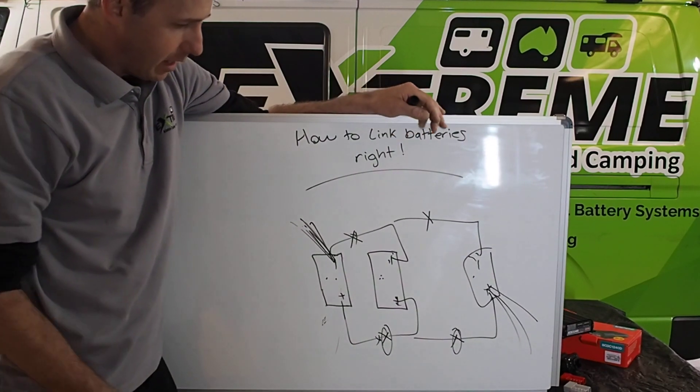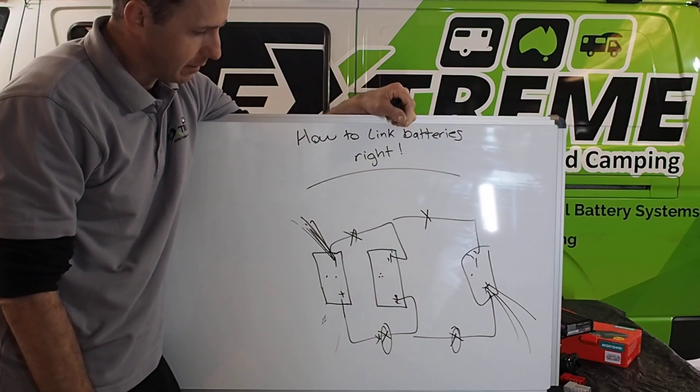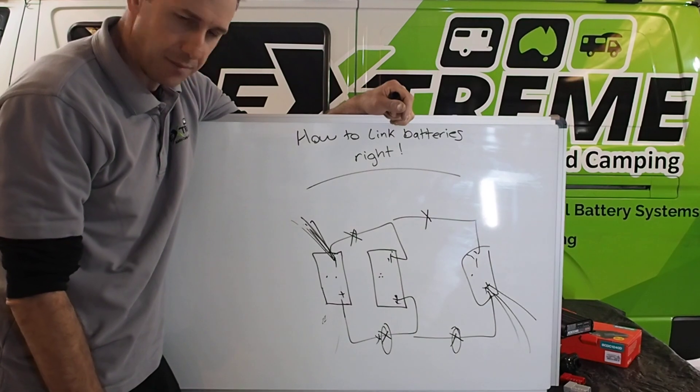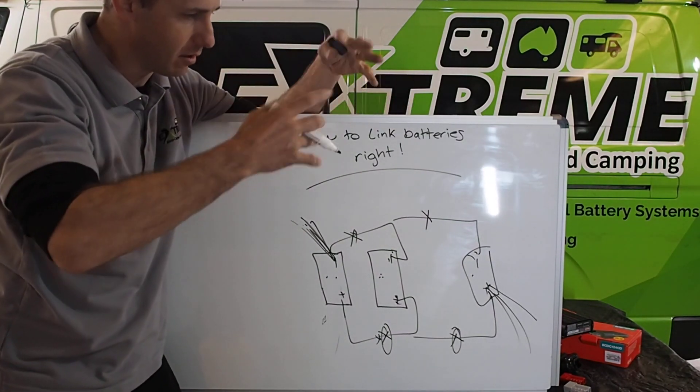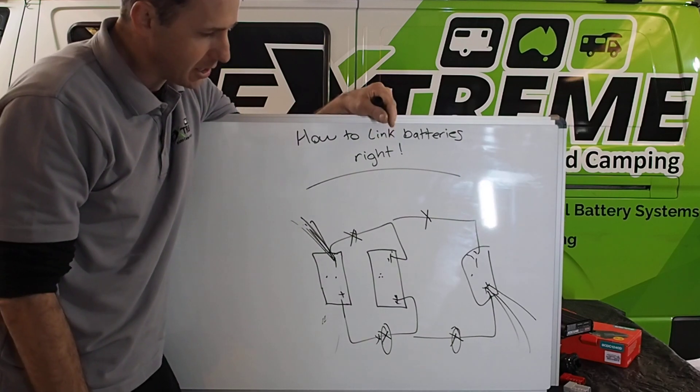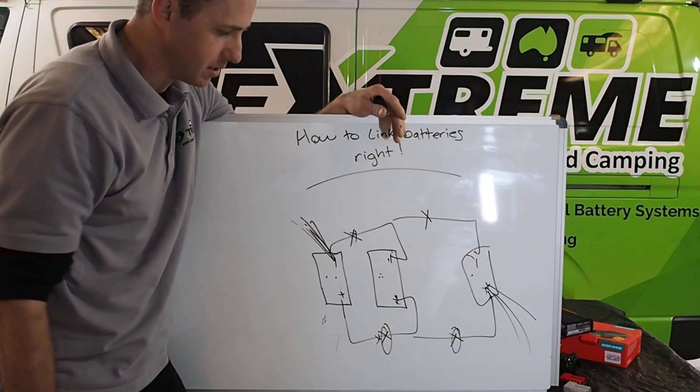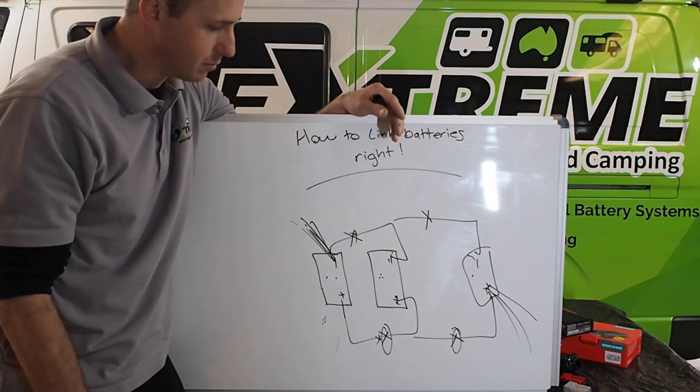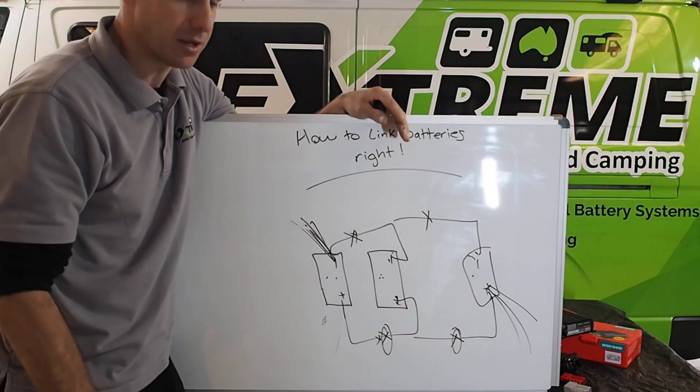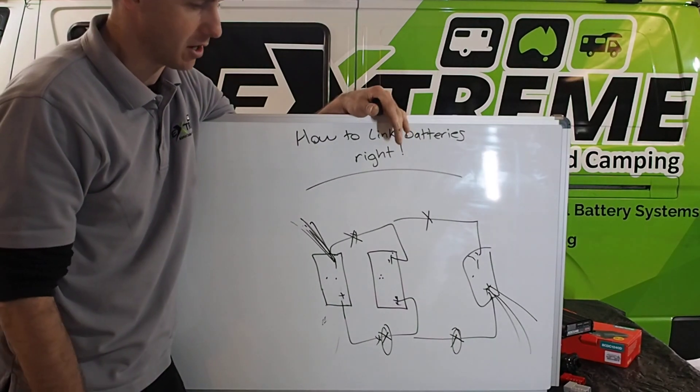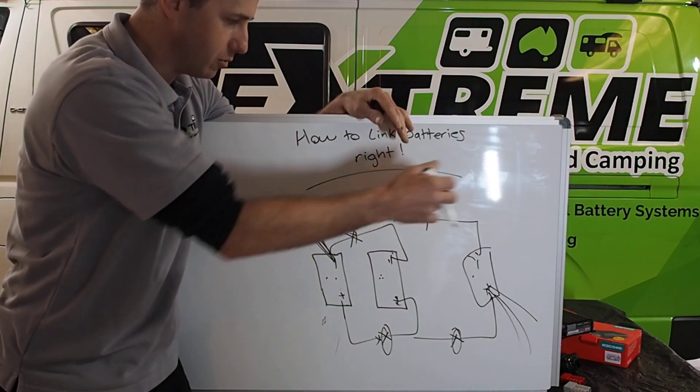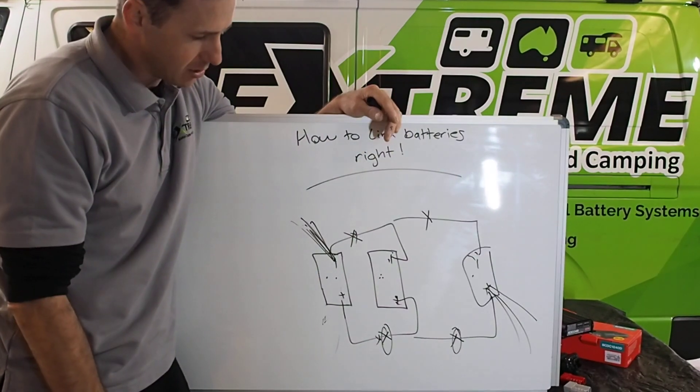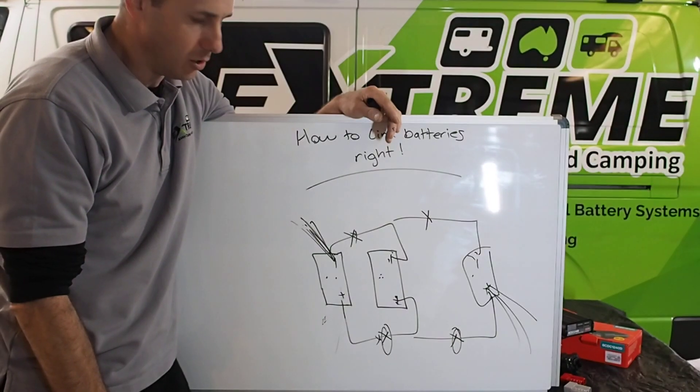Yeah, linking batteries right. Overcharging batteries happens all the time. Discharging batteries, batteries not working together. Essentially, when you're running with a 12-volt system and you increase your capacity, your objective is to increase capacity. You don't want them fighting each other. So you're creating one battery in a sense, just with multiple larger cells.